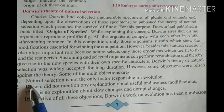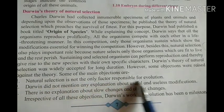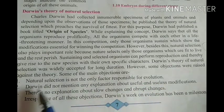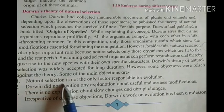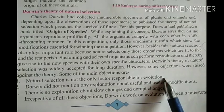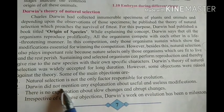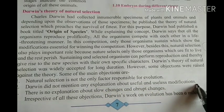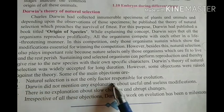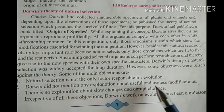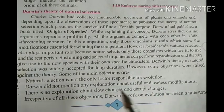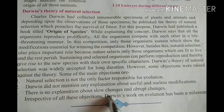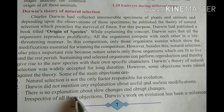Natural selection is not the only factor responsible for evolution. Darwin did not mention any explanation about useful and useless modifications — he only spoke about natural selection. And the third objection is that there is no explanation about slow change versus abrupt change.